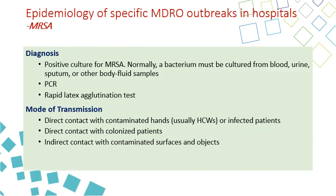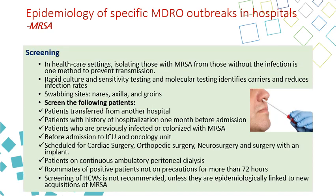For diagnosis, it is a positive culture for MRSA, PCR diagnosis, and rapid latex agglutination test. Transmission is usually by direct contact with contaminated hands, especially when the healthcare worker does not perform appropriate hand hygiene, direct contact with colonized patients who usually carry the organism in their nose, and indirect contact after contamination of surfaces and objects in the unit. Screening of MRSA is very important and is usually done by rapid culture and sensitivity testing and molecular testing.